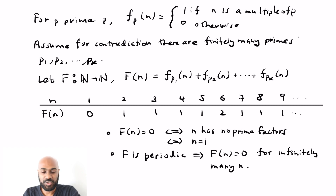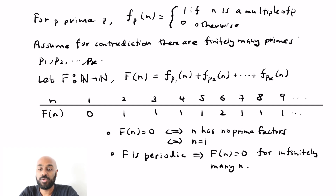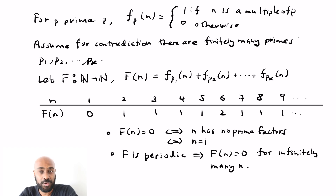So two cool proofs of the fact that there are infinitely many primes that I think are more natural than Euclid's original proof and are more akin to the type of processes I go through when investigating things in math research.